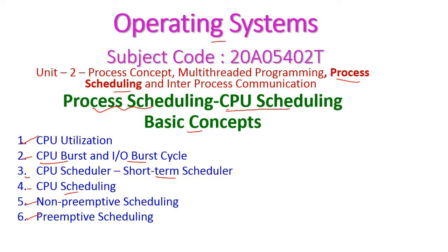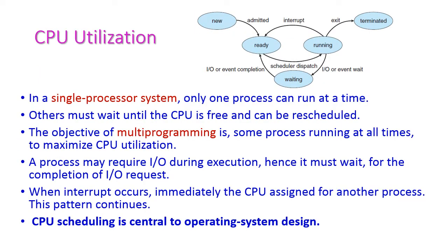First, let us see CPU utilization. In a single processor system, only one process can run at a time because there is only one CPU. All processes will wait in the ready queue. The scheduler will dispatch a process to the CPU for running, and each process should wait until its turn comes to run on the CPU, then the process will be rescheduled.